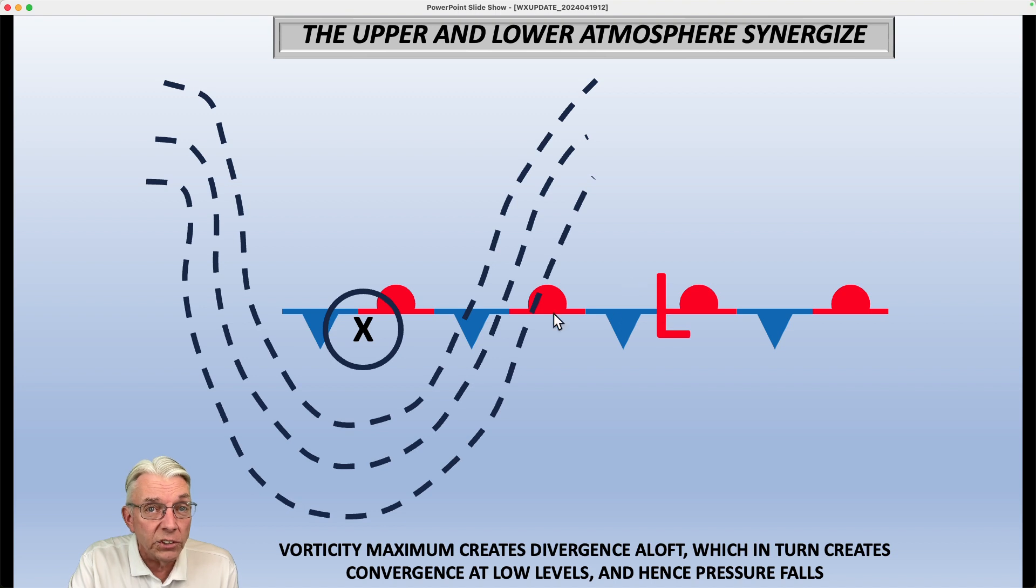And then if that low begins to intensify, then this part of the stationary front would become a cold front because the counterclockwise flow around it would be driving the colder air southward. And over here, this would become a warm front as we'd have a subtly wind and the cold air would be retreating and the warm air would be coming in to replace it. And this is your classic, what we call Norwegian cyclone model.